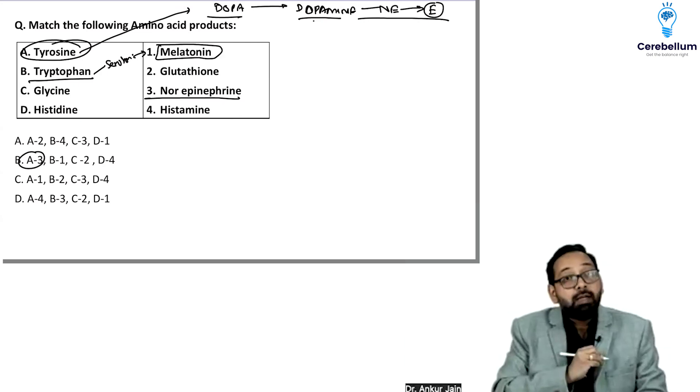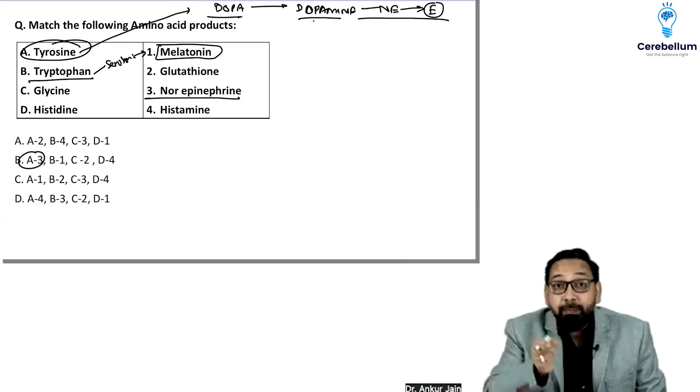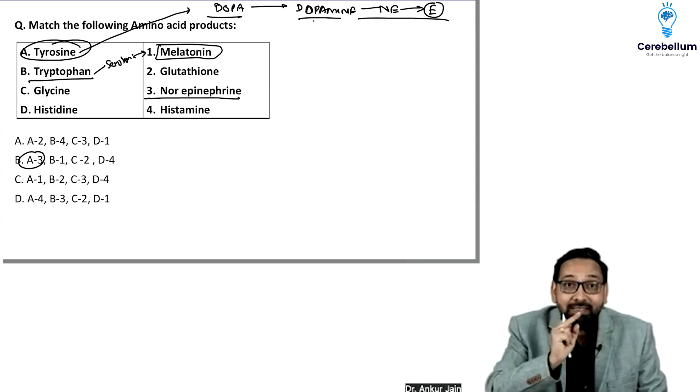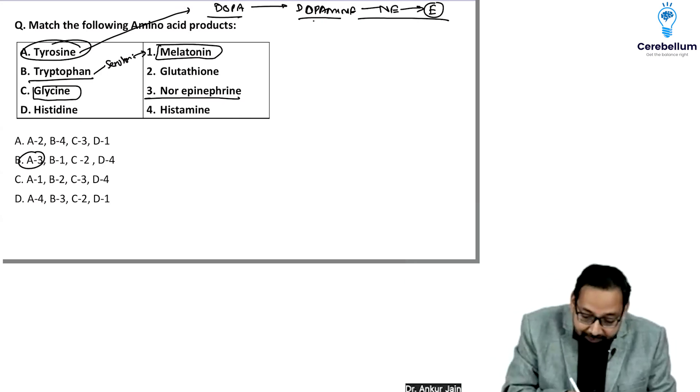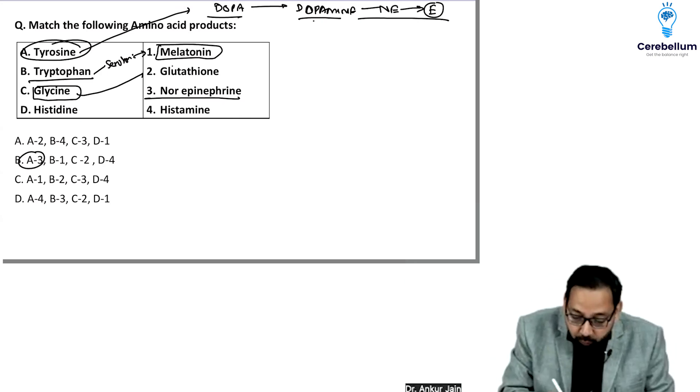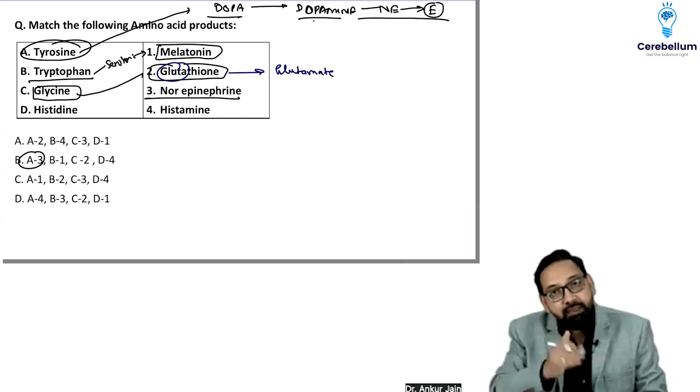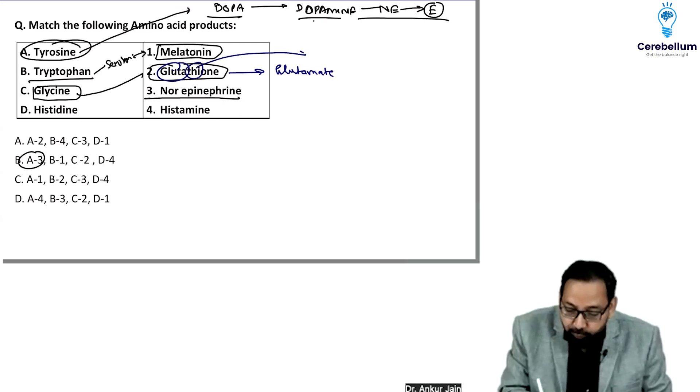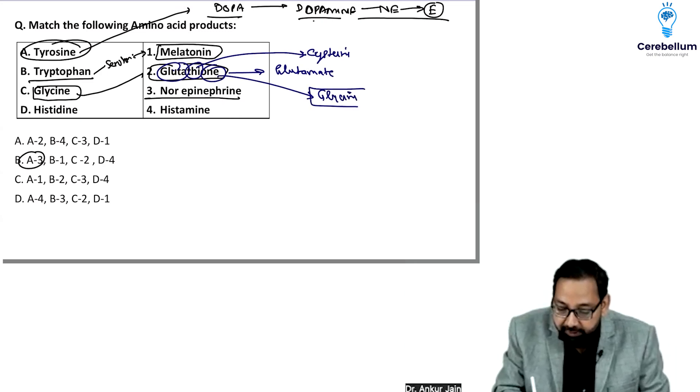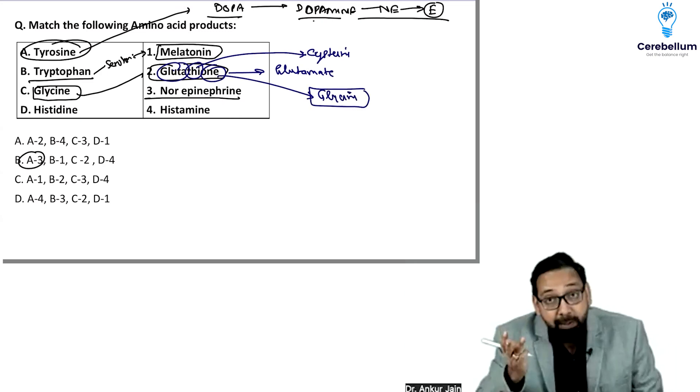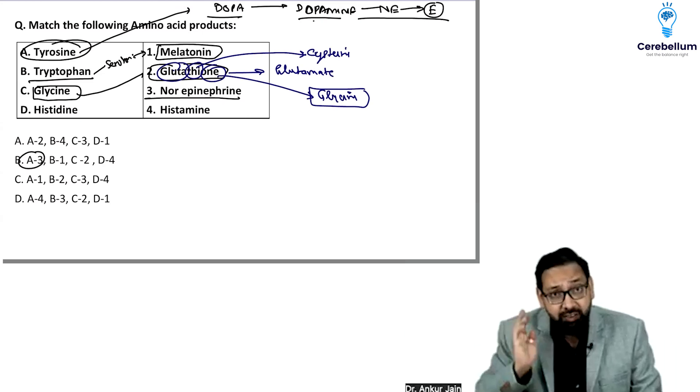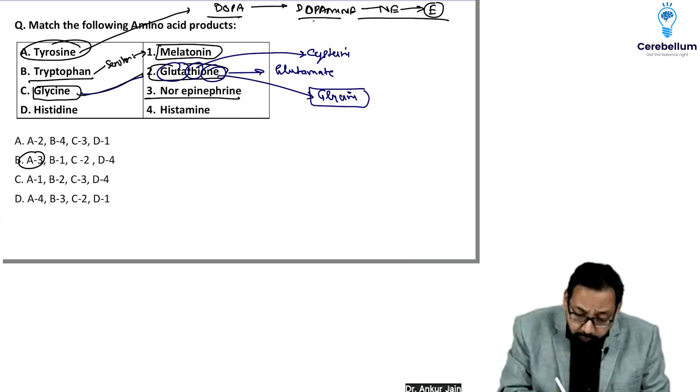Precursor for serotonin is tryptophan, for melatonin is also tryptophan. Glycine takes part in glutathione synthesis. Glutathione is made up of glutamate, cysteine, and glycine. Glutathione is a tripeptide made up of glycine, glutamate, and cysteine.